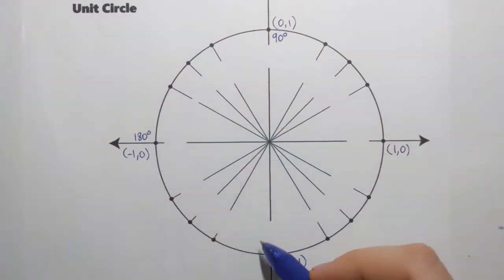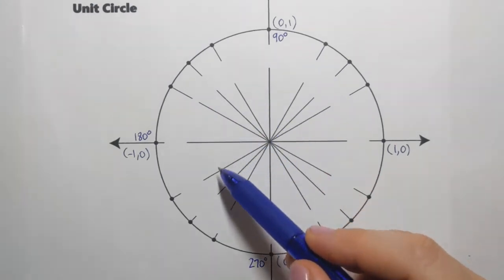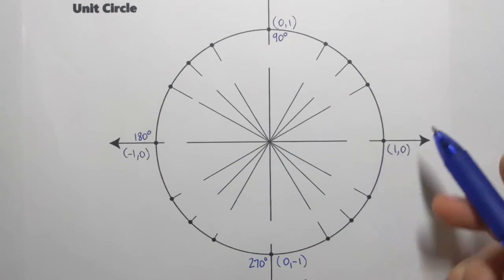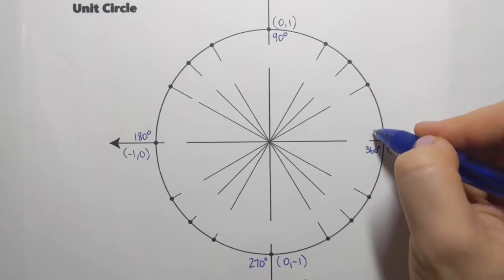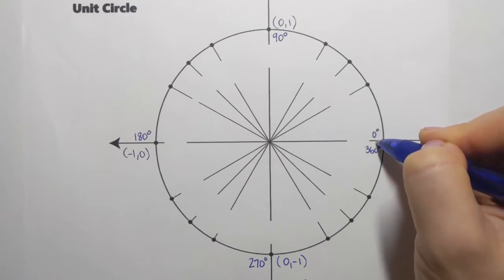Down here, 180 plus 90, that's where 270 degree angle terminates. And if I make a full circle and come back to where I started, here we'll have 360 degree angle. And of course, at that same place, 0 degree angle terminates. That's when I don't sweep at all.